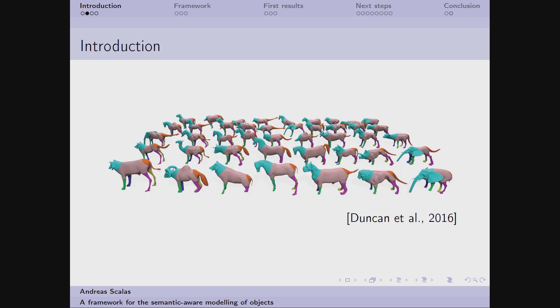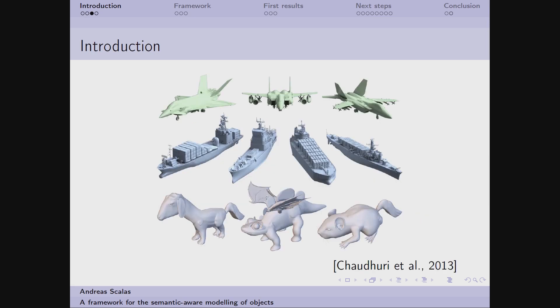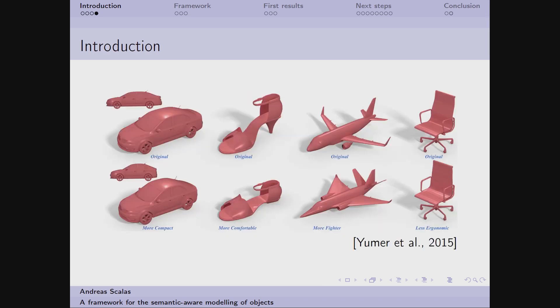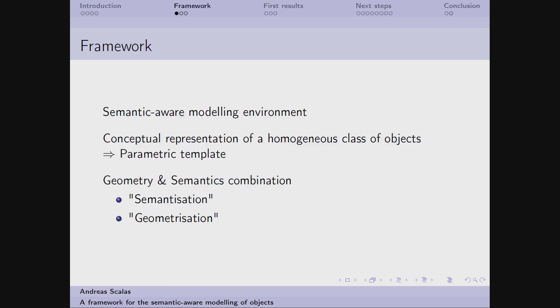There are a lot of works which try to set up a semantic approach. For example, in this one, the authors try to exchange some interchangeable components for obtaining new shapes, as you can see. And in these other two, instead, the shape of the object is modified following some textual attributes, like more compact, more uncomfortable, and so on.